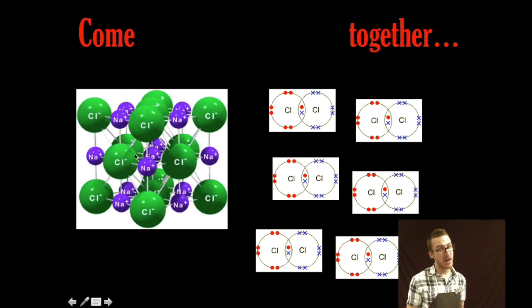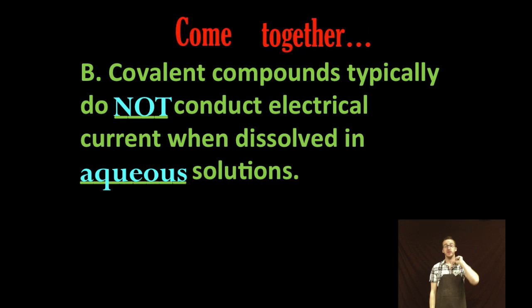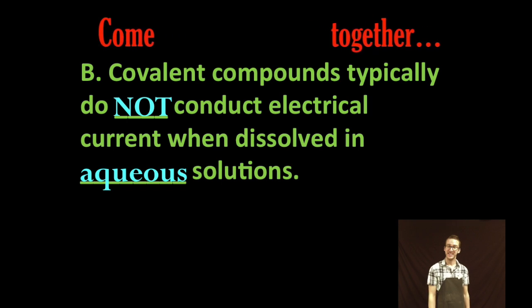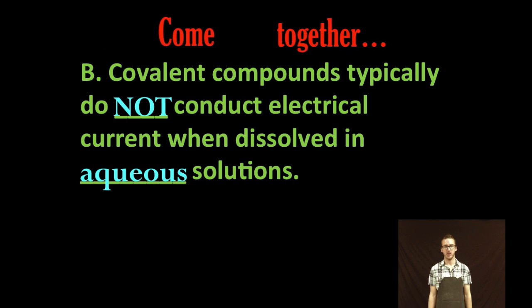Whereas an ionic compound, those bonds are holding each of the ions together very tightly. Covalent compounds typically do not conduct electrical current when dissolved in aqueous solutions. Again, we aren't ripping electrons away like we are in ionic compounds, so there aren't any charged particles to come apart and conduct electrical currents.